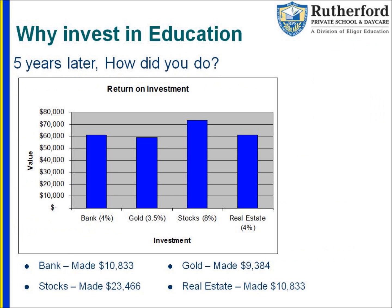Now let's see how that money you invested did five years later. At the bank, you would have made $10,833, so your $50,000 turned into just over $60,000. In the stock market, you would have made $23,466, so your $50,000 would have grown to just over $70,000. If it was gold, you would have made just under $10,000, so $50,000 would have turned into just over $60,000. And with real estate, you would have made $10,833, so just over $60,000.